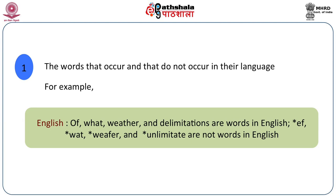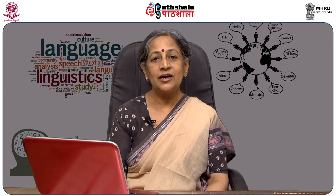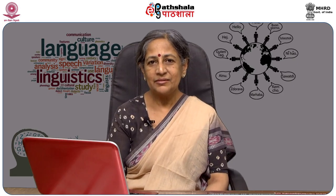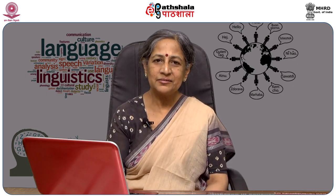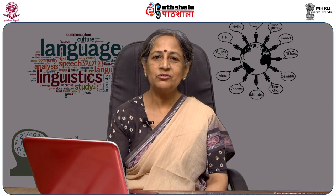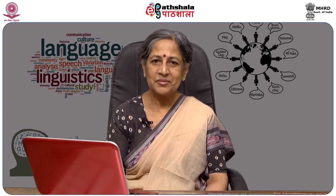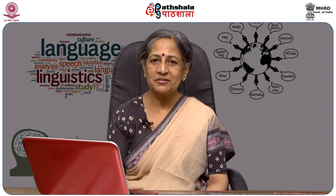A word like 'weafer' (W-E-A-F-E-R) doesn't occur in English, but there's nothing wrong with it either by looking at the spelling or looking at the sound — it is a possible word. There is no word 'unlimit'. I can imagine that word; it means to remove a limitation. But it doesn't occur in English.